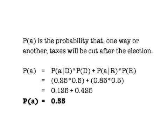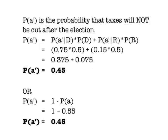Now we can find the total probability that the business tax will be cut. We do that by adding together 0.425 and 0.125, which gives us 0.55. This is the probability that, regardless of who gets elected, the taxes will be cut. I got this answer by adding P(A given D) times P(D) plus P(A given R) times P(R). The probability that taxes will not be cut is 0.375 plus 0.075, or 0.45.